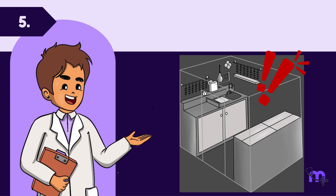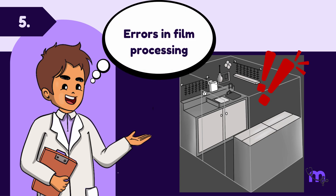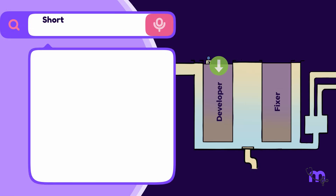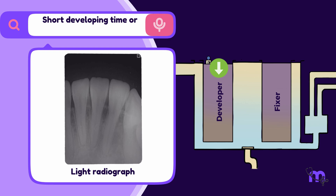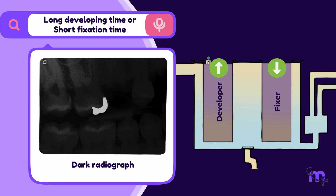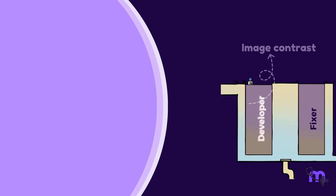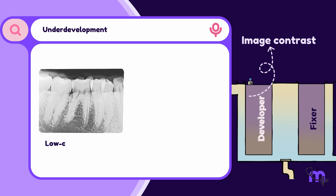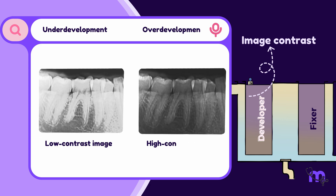Carelessness in the dark room can compromise the final image. If the developing time is too short, a light radiograph is produced. Conversely, excessive fixation can also lead to a light radiograph. If the film is left in the developer for too long or fixing is inadequate, a dark film results. Developing also impacts the image's contrast — underdevelopment produces a low contrast image, while overdevelopment increases contrast.